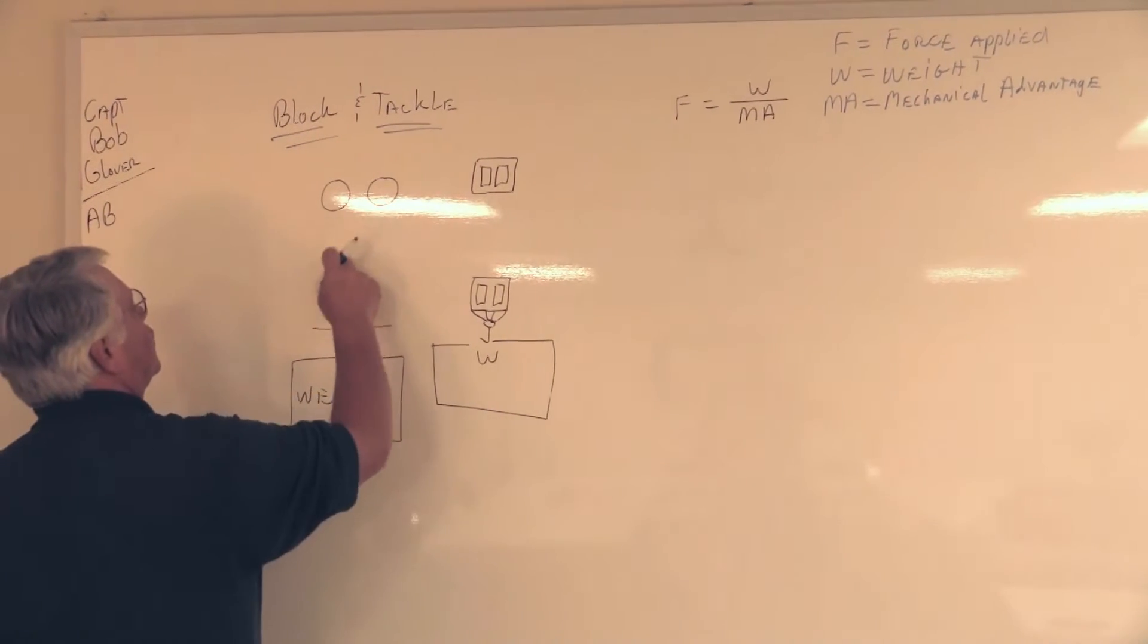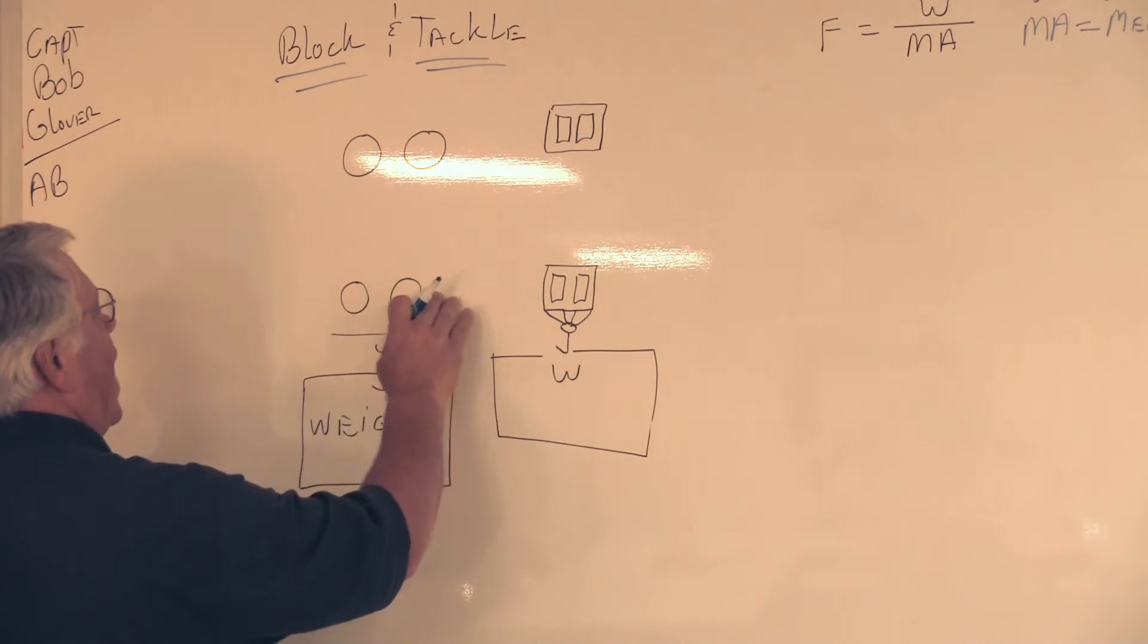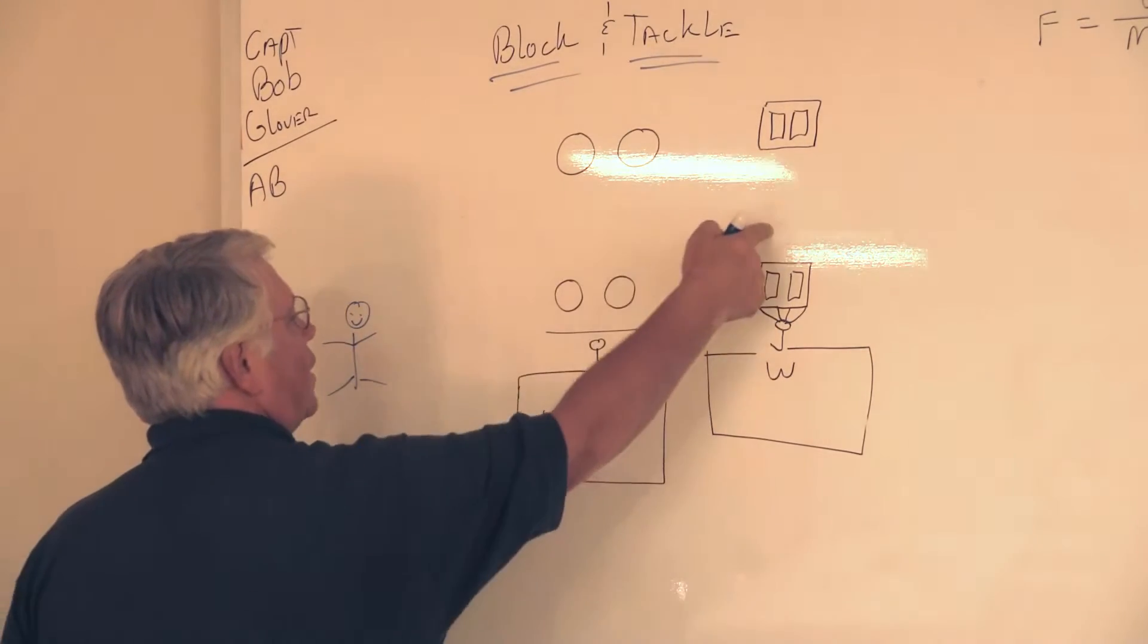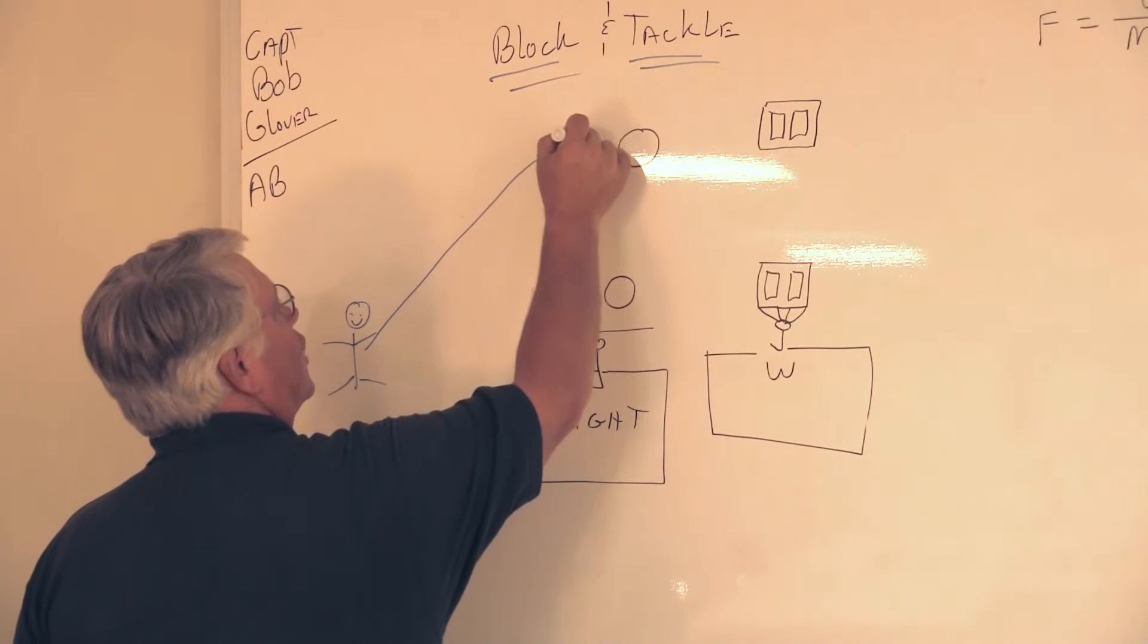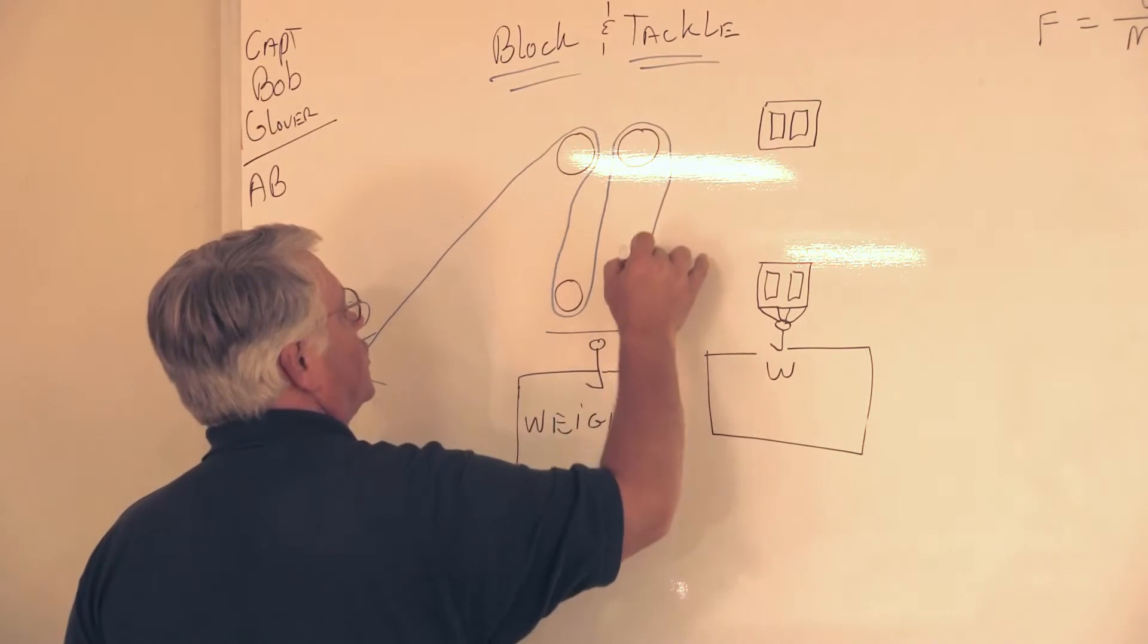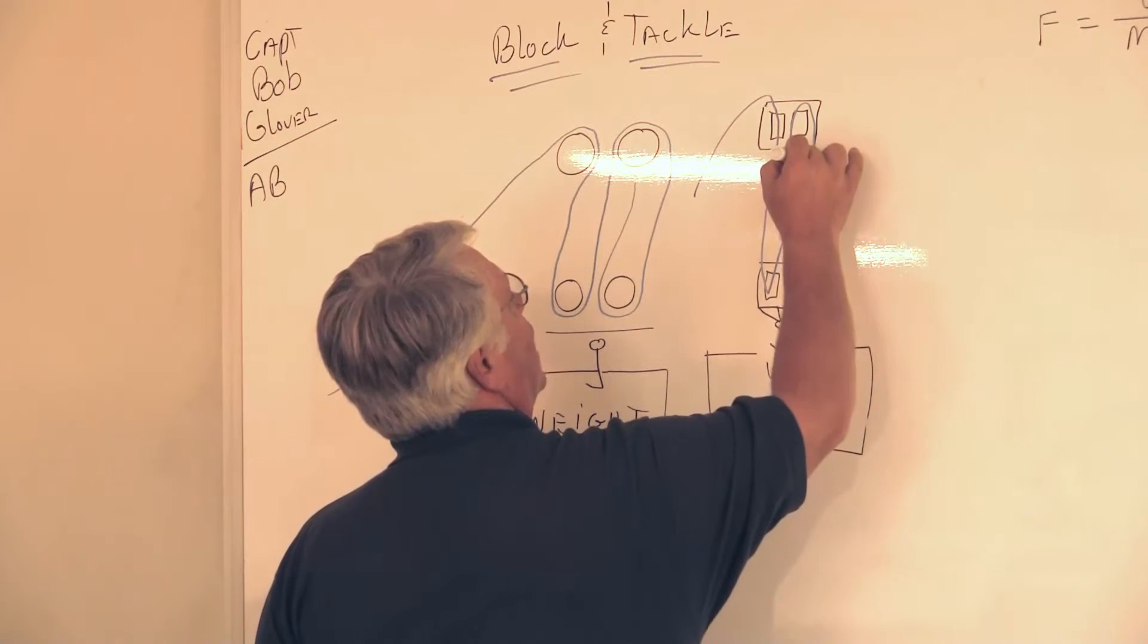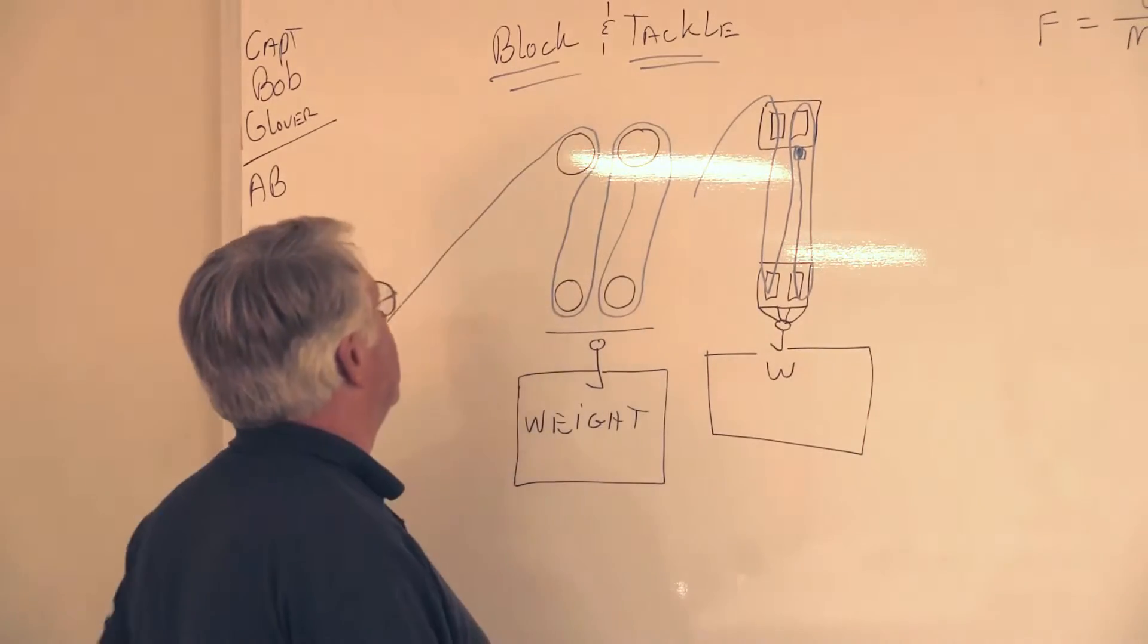I have the actual shivs, and this way when I draw the line in, it makes it easier to see how many parts of the falls I have and the mechanical advantage. We're going to draw our little stick figure here pulling on this block and tackle system to lift up a certain amount of weight. This line represents the line we're pulling on. It's going to go up through that shiv, down and around through the next shiv, up and over the next shiv, and then it's going to be made off on the becket at the bottom of this block.